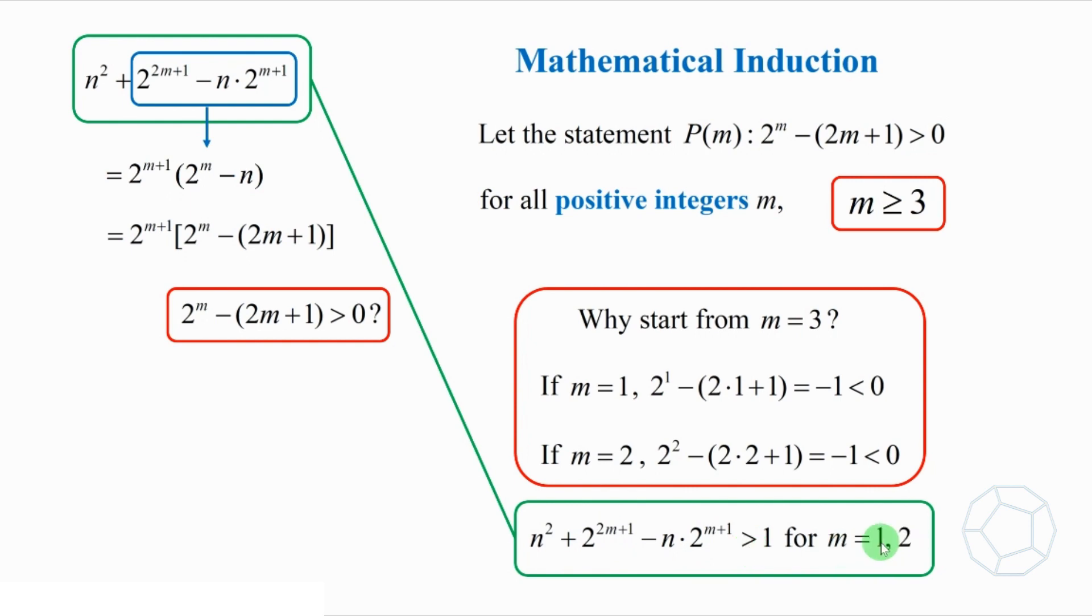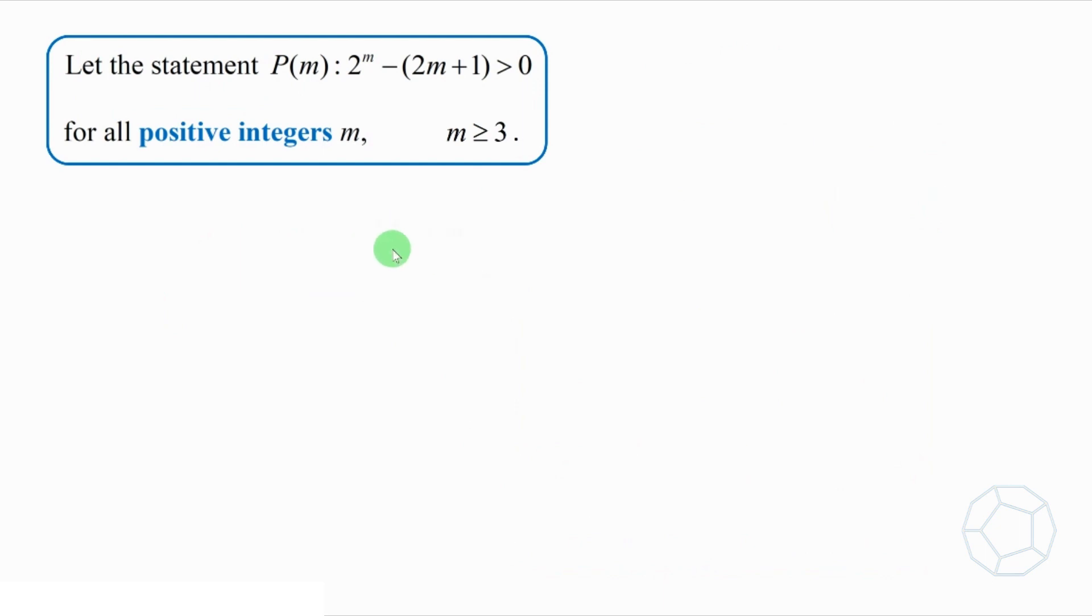So, we're good to go. Let's start with the first case. When m equals 3, left-hand side equals 1, which is larger than 0. So, p of 3 is true.